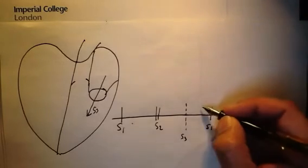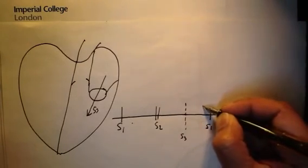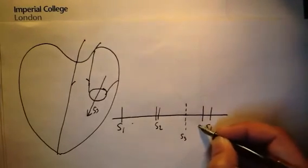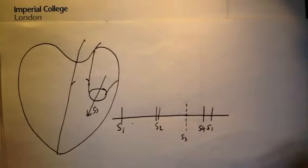The other thing you might hear is a fourth heart sound. Now the fourth heart sound happens just before the first heart sound. And so if you hear a fourth heart sound, and then a first heart sound, you hear the timing different. 4-1-2, 4-1-2, 4-1-2.